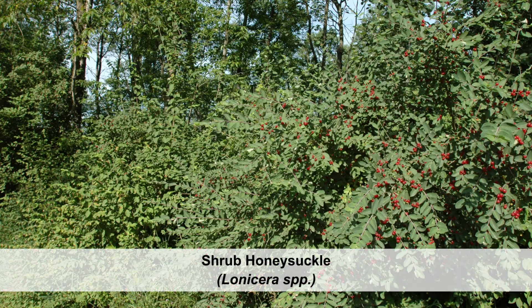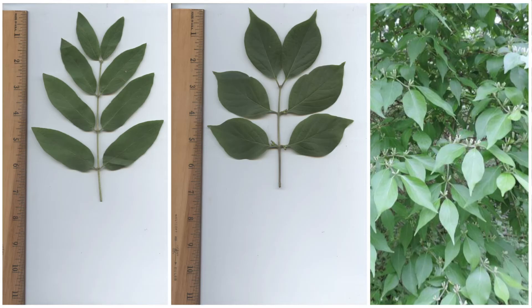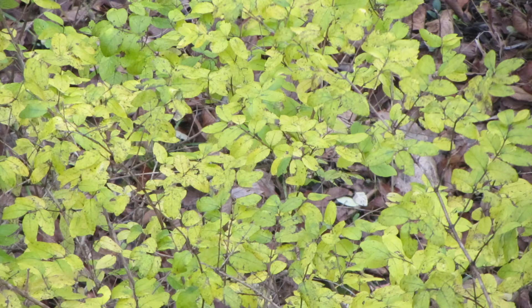Shrub honeysuckles are multi-stemmed, wide-spreading bushes with arching branches. Height at maturity is variable and ranges from 6 to 20 feet. Shrub honeysuckle leaves range from 2 to 3 inches long, have an elliptical to ovate shape, with some species having an elegantly tapered tip. The leaves have smooth, or entire, margins and are oppositely arranged on the stem. Leaves often emerge earlier in the spring and remain on the plant later in the fall than many native plants in habitats where shrub honeysuckles are found.